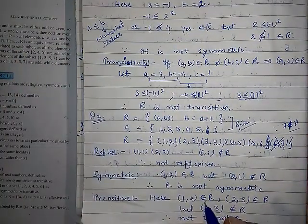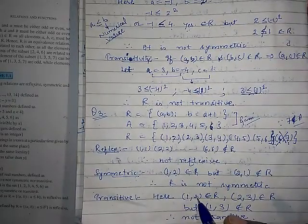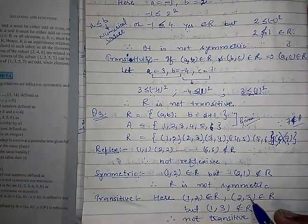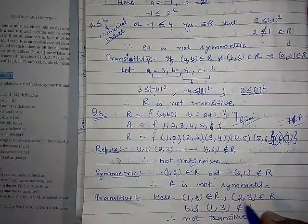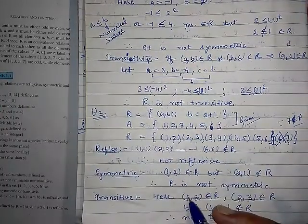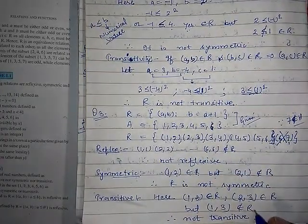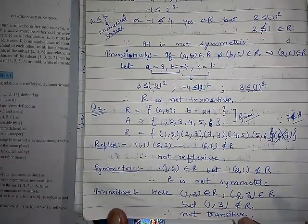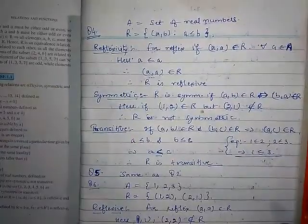For transitivity: (1,2) belongs to R and (2,3) belongs to R, so (1,3) should belong to R. But (1,3) does not belong to the relation. Therefore R is not transitive. So the answer is: R is neither reflexive nor symmetric nor transitive.